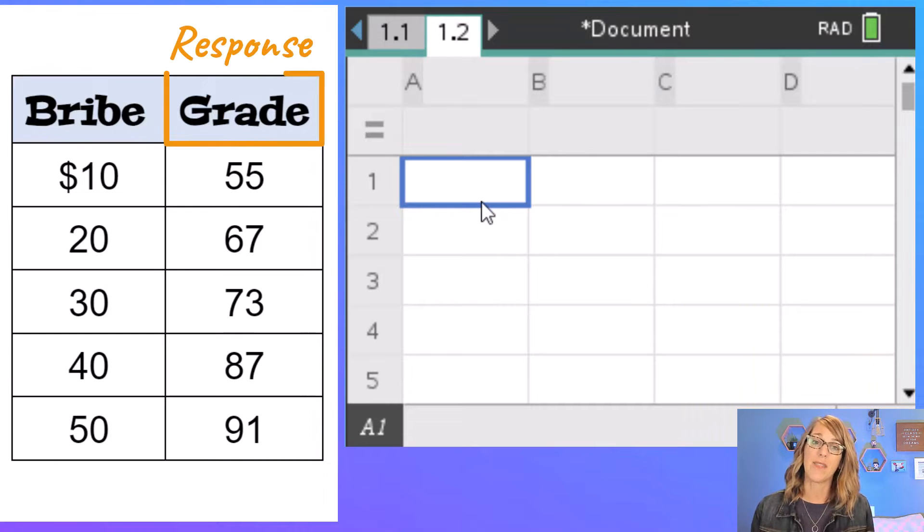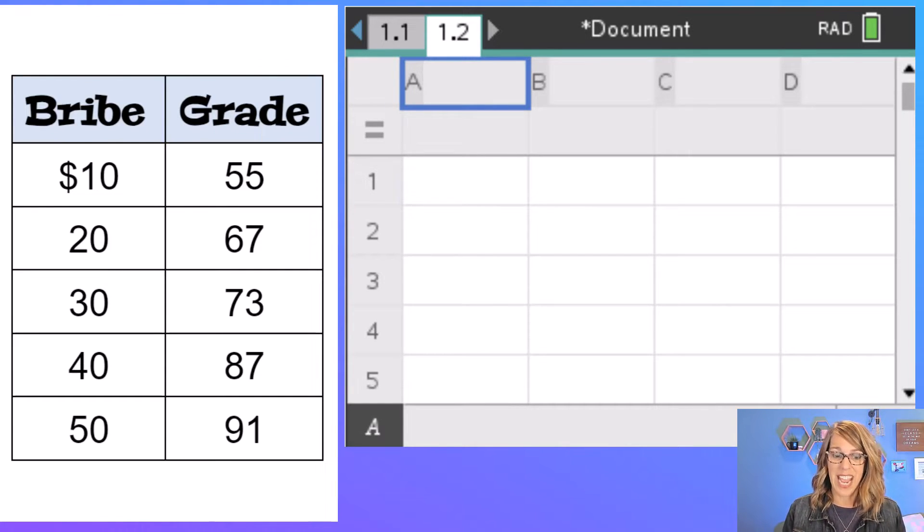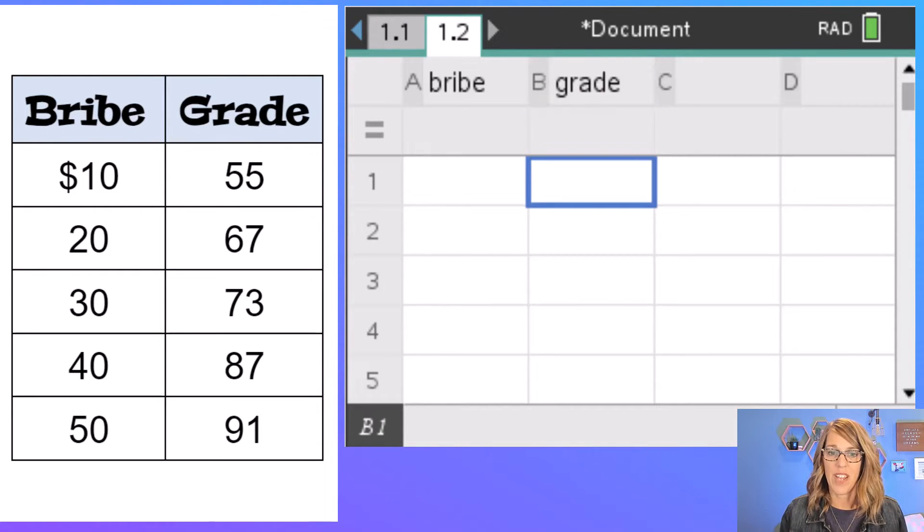The response variable is the grade. So we are going to arrow up to the top of that list A and call it bribe, B-R-I-B-E, enter. And then let's go ahead and arrow over to the top of the list B name and call it grade.